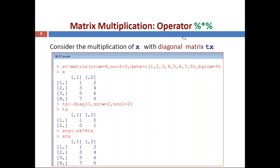You can execute the multiplication command using the matrix multiplication operator. The result is stored in a variable named xtx: xtx = x %*% tx. Then simply calling xtx displays the result. This is how you perform matrix-matrix multiplication.